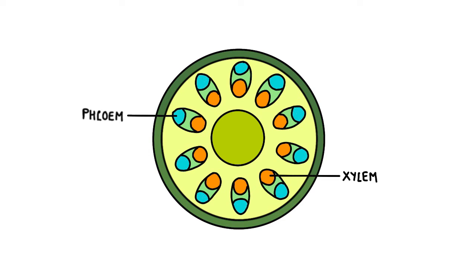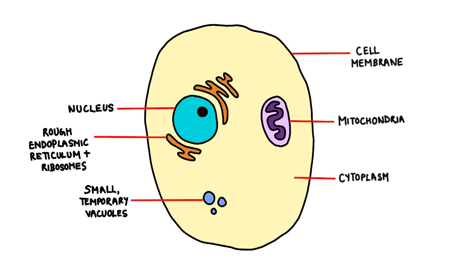However, this is the most basic plant structure we know. The second type of cell is an animal cell. It is very similar to a plant cell, except that it doesn't have chloroplasts or a cell wall, and its vacuoles are much smaller and temporary.